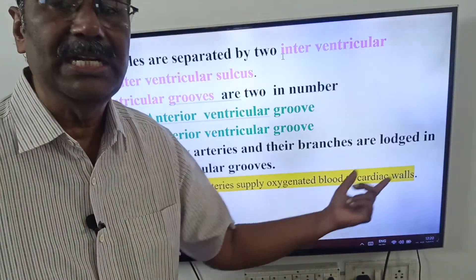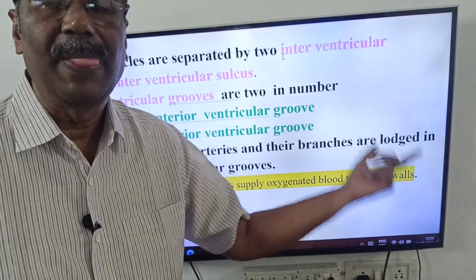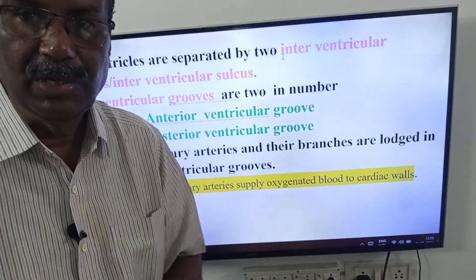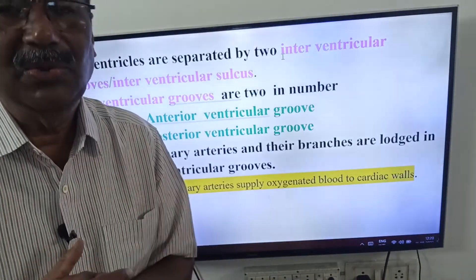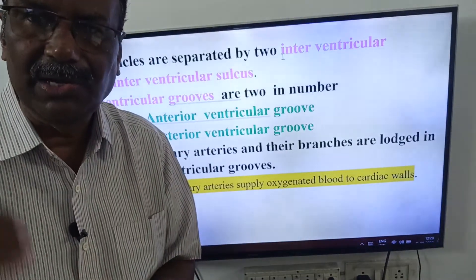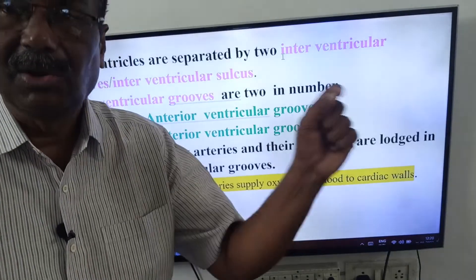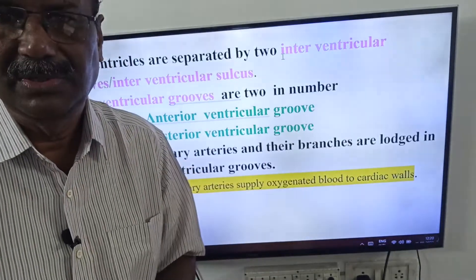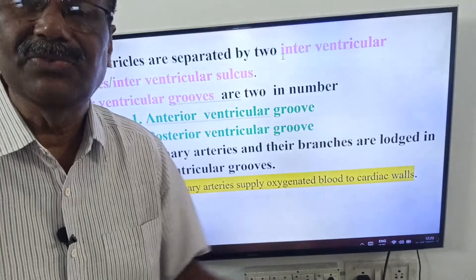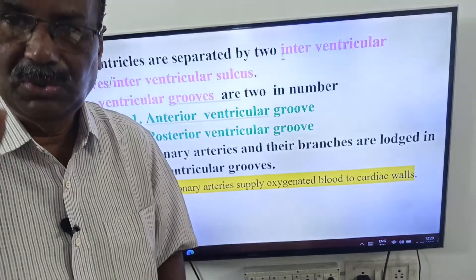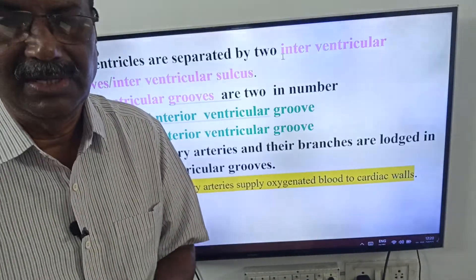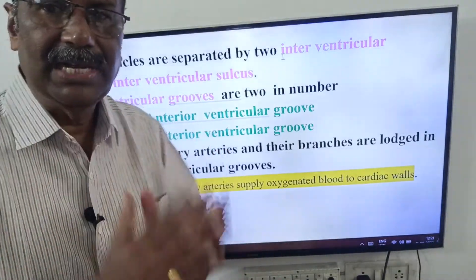Coronary arteries supply oxygenated blood to the cardiac walls, that is, the myocardium. We have two coronary arteries, or one pair of coronary arteries, and they are present within the interventricular grooves.